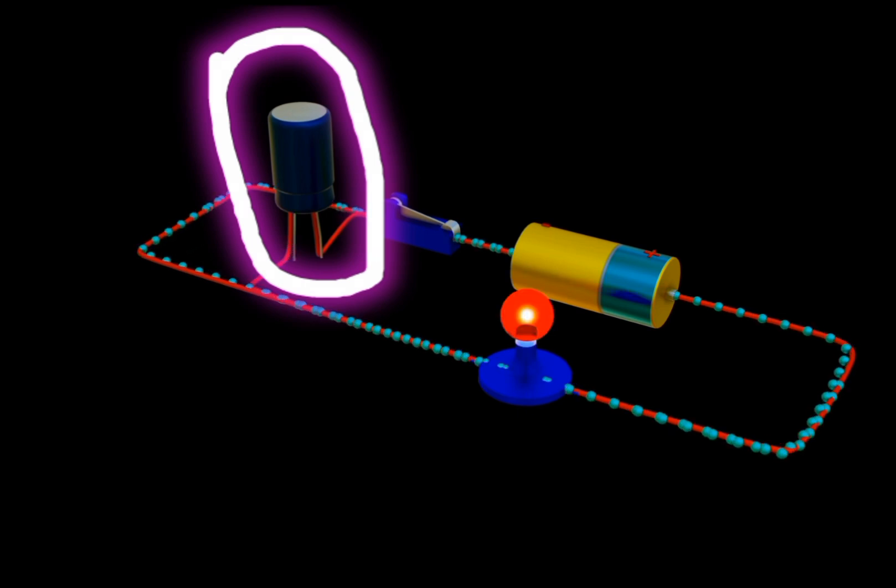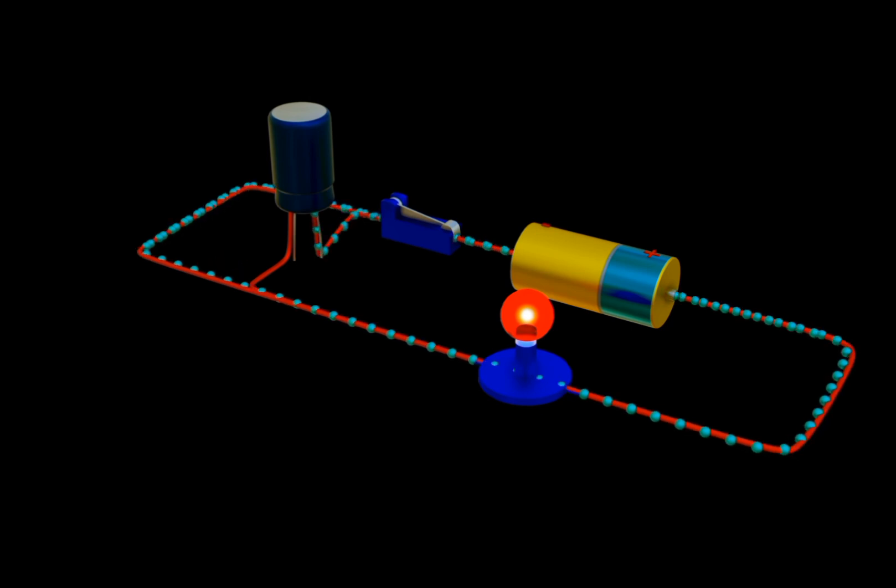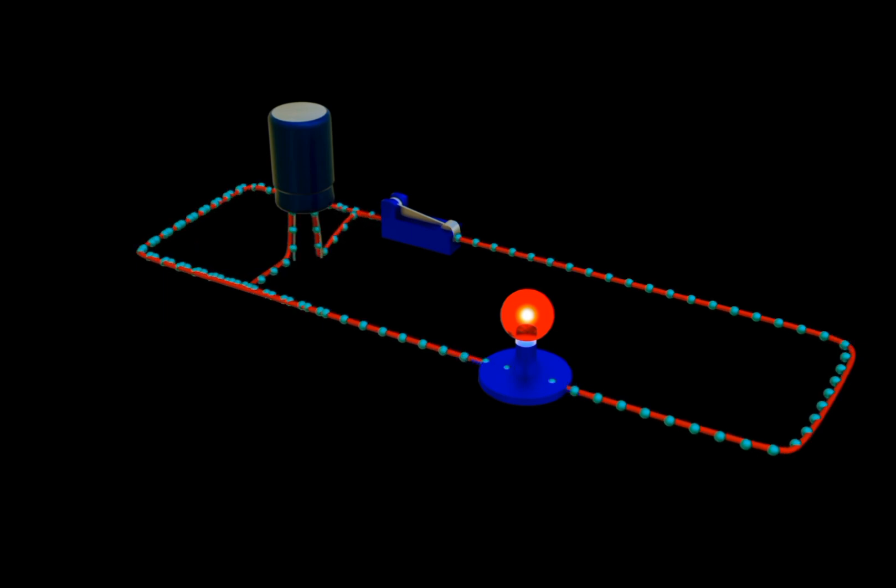A capacitor is an electronic device that stores electrical energy in an electric field by accumulating electric charges on two closely spaced surfaces that are insulated from each other.